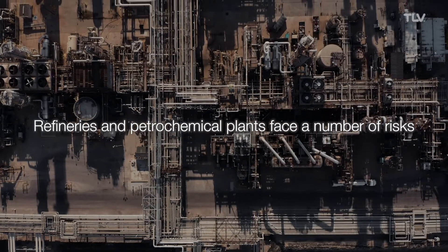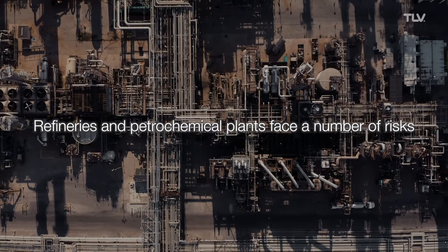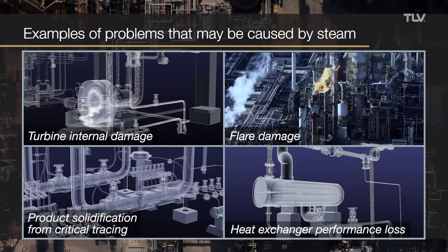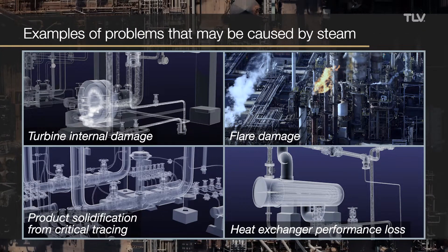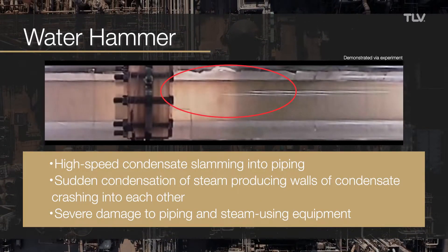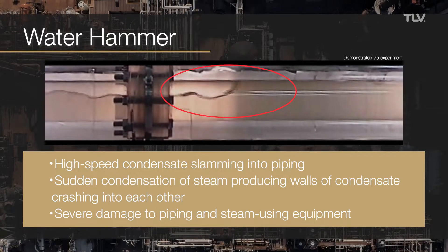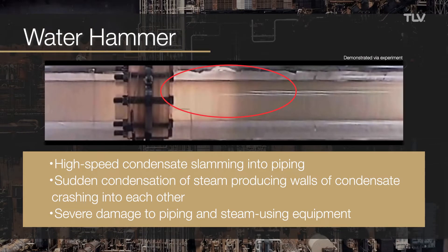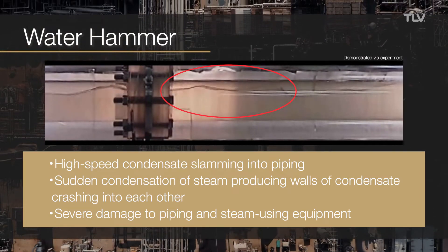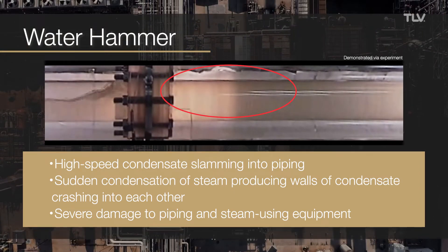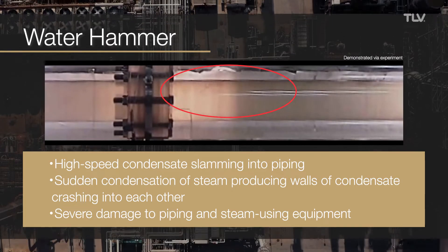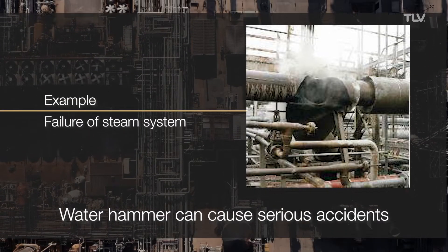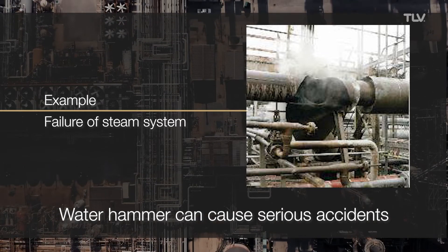Of the various risks present in refineries and petrochemical plants, many originate from steam. Among these risks, water hammer can have a significant impact on the plant, causing damage to piping and steam-using equipment. Water hammer can cause serious accidents and should not be overlooked.